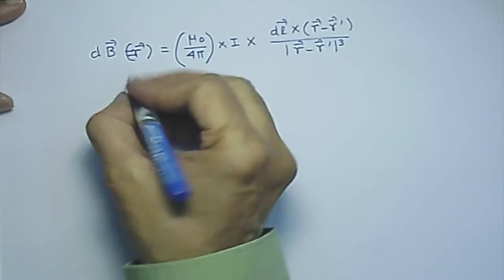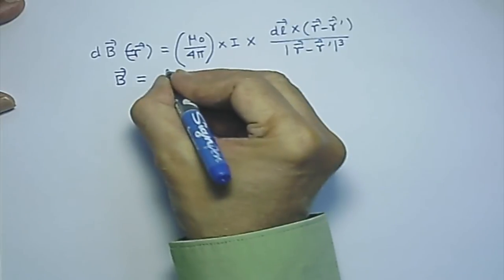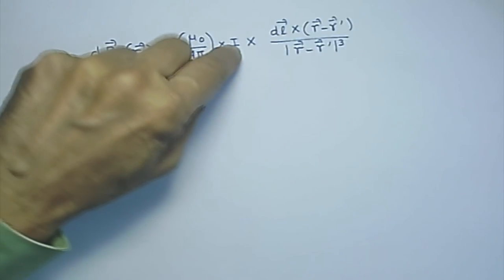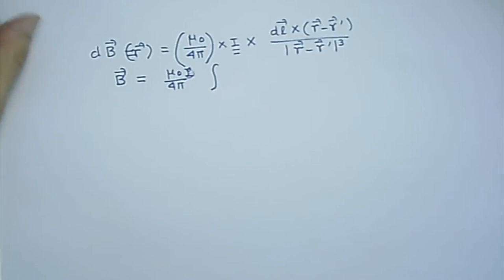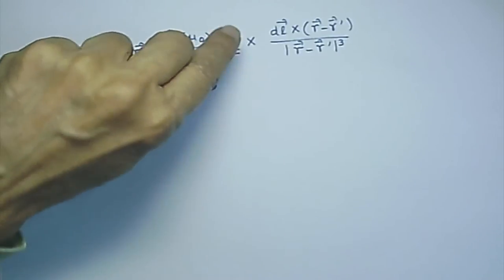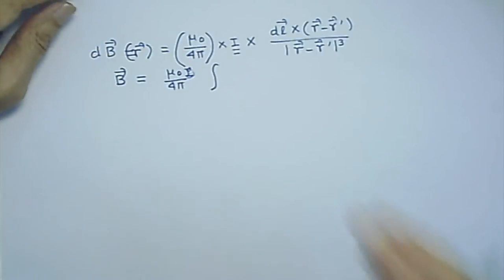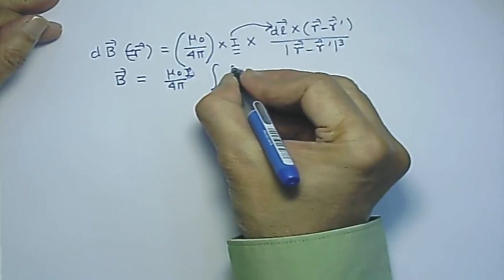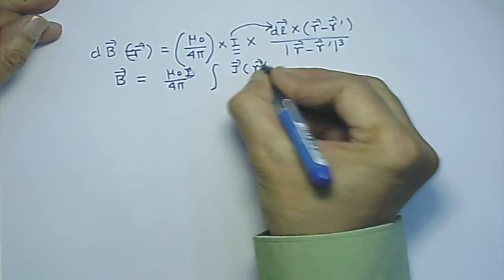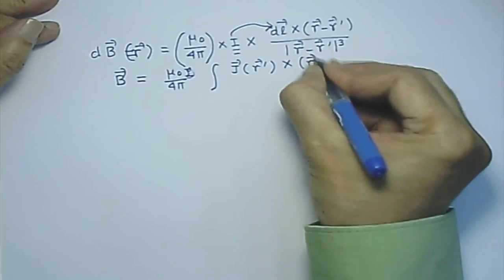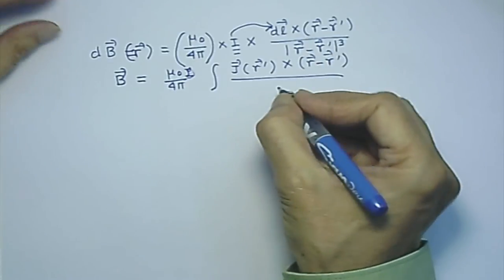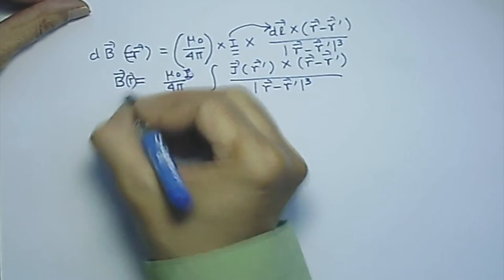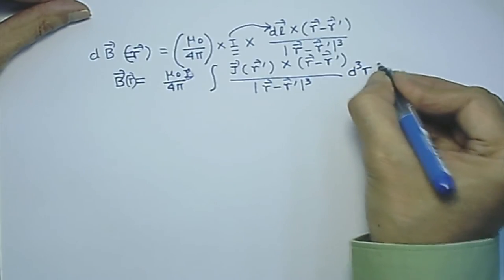I do some manipulations. I write this as integral of del(1/|r − r'|)×J(r') d³r', noting that the gradient of 1/|r − r'| is −(r − r')/|r − r'|³, and I have interchanged the cross product (since a×b = −b×a). Then since del is taken with respect to r variable and has no effect on the integration over r', I write B = (mu_0/4pi) del × integral of J(r')/|r − r'| d³r'.